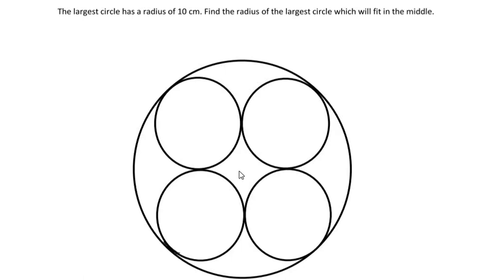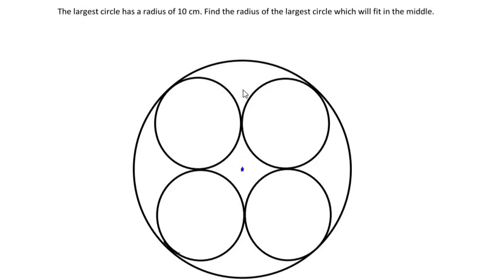Hello and welcome to my channel. In this video we are going to solve an example on circles. The largest circle has a radius of 10 centimeters. We can see that there is a large circle which inscribes four small circles within it, and the four circles are the same in terms of radius. The largest circle has a radius of 10 centimeters, so from the center to the circumference we have a radius of 10 centimeters.